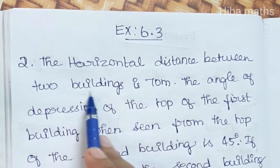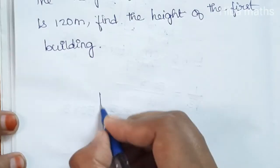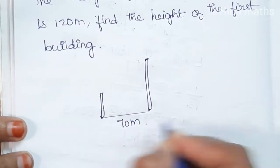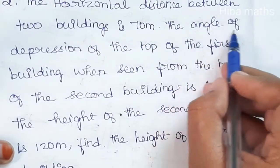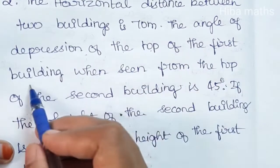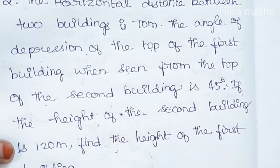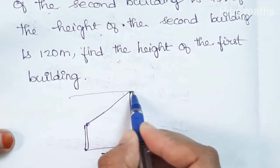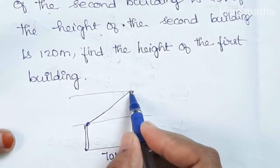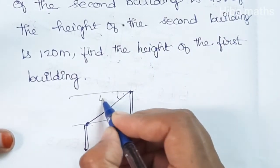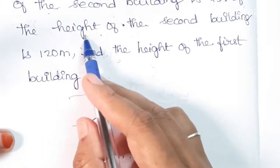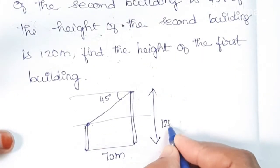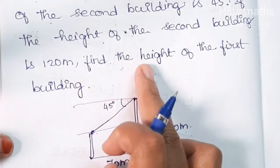The horizontal distance between two buildings is 70 meters. There is one small building on this side and a big building on the opposite side. The two buildings are 70 meters apart. The angle of depression of the top of the first building when seen from the top of the second building — first building top, second building top. The height of the second building is 120 meters. Find the height of the first building.